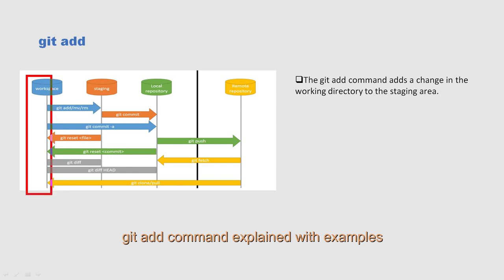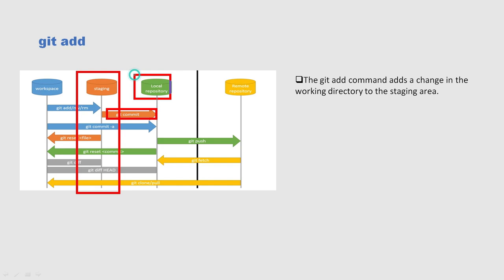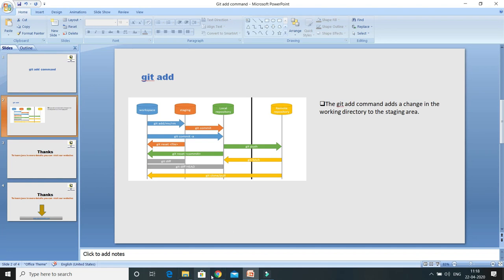Here you can see we have a workspace or working directory. If you create any new file or do any modification to an existing file, first we issue git add, which adds files to the staging area. Afterwards you have to commit your changes from the staging area, so that committed file will be available in the local repository. After that we use git push so that our changes will be pushed to the remote repository and publicly available.